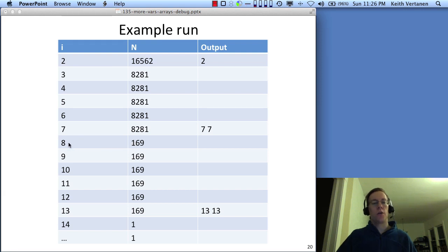And 8 doesn't go into 169. 9 doesn't go into 169. 10 doesn't go in. 11 doesn't go in. 12 doesn't go in. But 13 does. And in fact, 13 times 13 is 169. And at this point, everything else just returns 1. We're left with just 1. And so 14 obviously doesn't divide into 1. And the prime factorization of the number is thus 2 times 7 times 7 times 13 times 13.